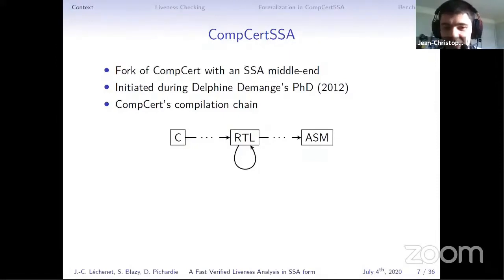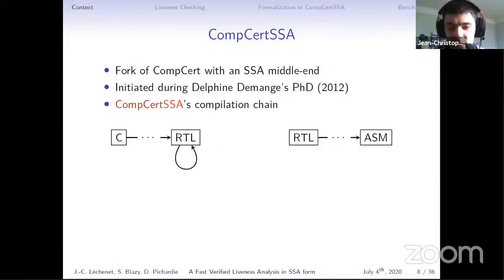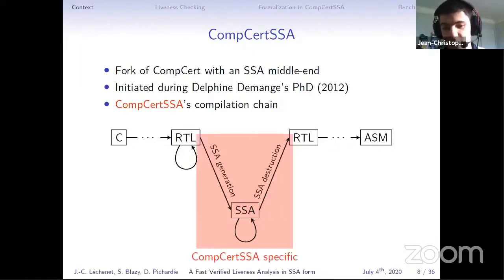Fortunately, there's a fork of CompCert with an SSA middle-end. It's called CompCert SSA that was initiated during, actually, it's a modified CompCert's compilation chain. Currently it only adds the passes. After RTL and its optimizations, there's an SSA generation pass that turns the program into SSA, where SSA-specific transformations can be applied. And after that, the SSA destruction phase turns the program back into RTL and the standard CompCert compilation chain.